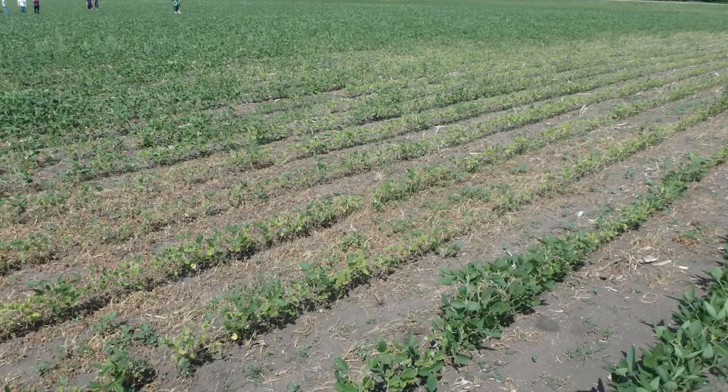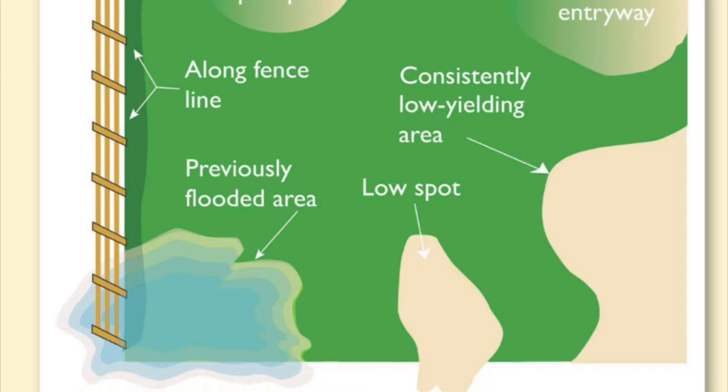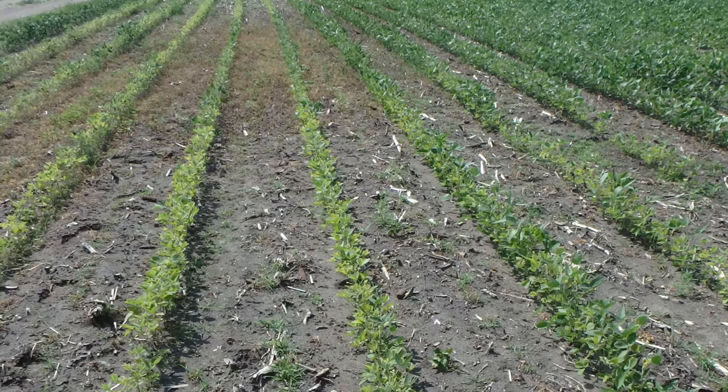Spots to investigate are any areas of poor soybean growth like headlands, low spots, or high pH areas. In the most recently identified field with SCN, symptoms above ground appeared like a patch of IDC that plants never really grew out of in the headlands.